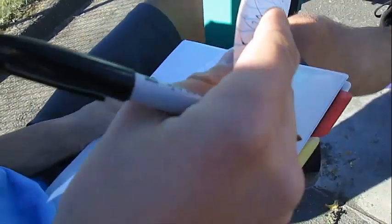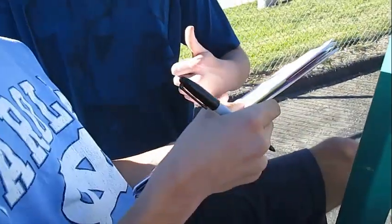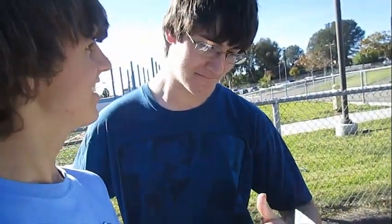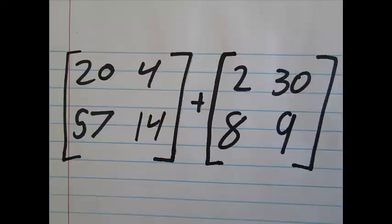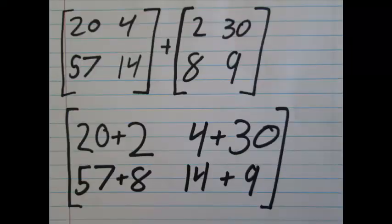Rising up to the challenge of our rival. Adding matrices is quite easy. All you have to do is add each number in the first matrix to the corresponding number in the second matrix.